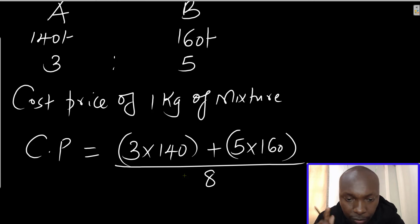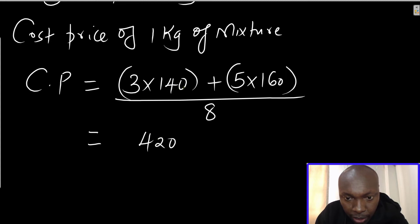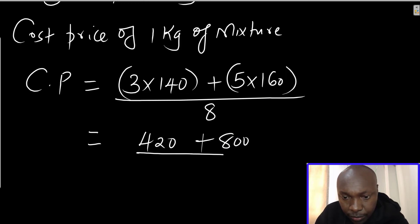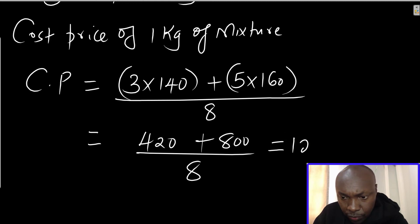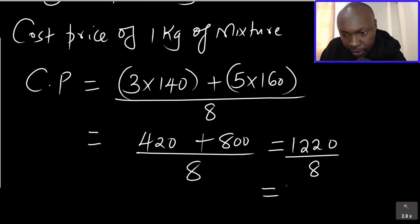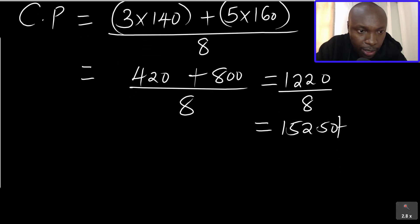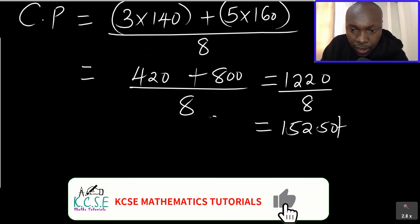Working this out: 3 multiplied by 140 gives 420, plus 5 multiplied by 160 gives 800, so we get 1220 divided by 8. Dividing that gives 152 and 50 cents. So we have now obtained the cost price of one kilogram of the mixture, which is 152.50.